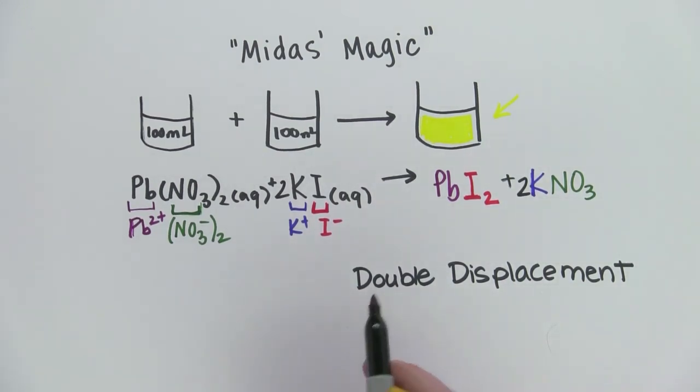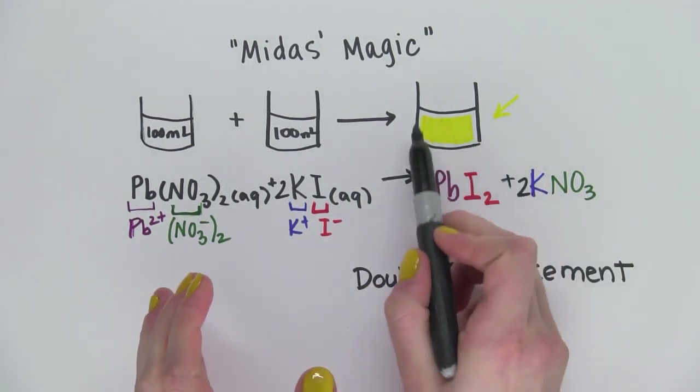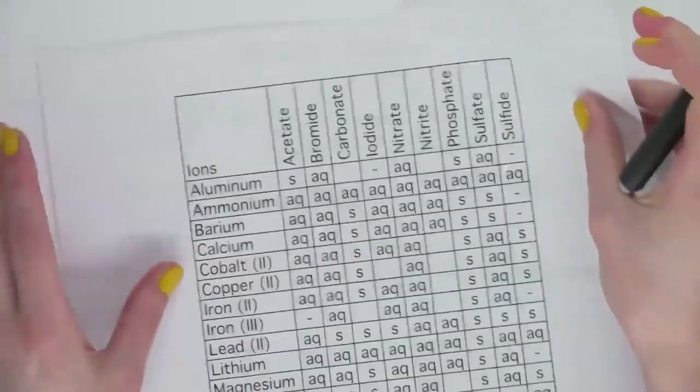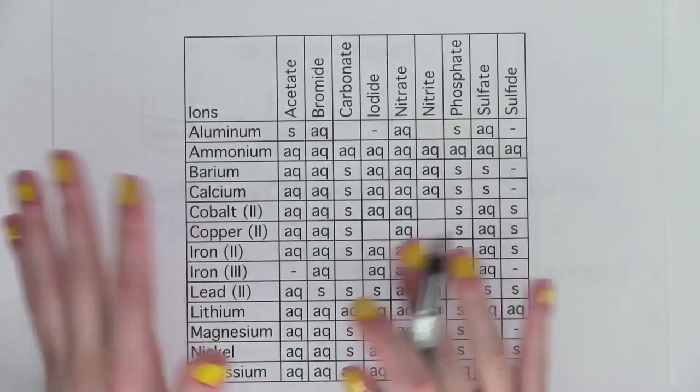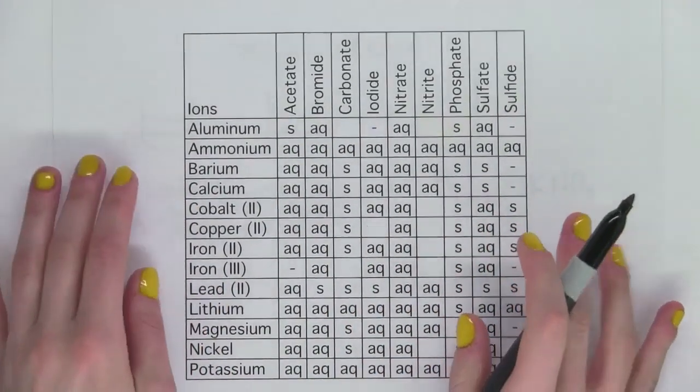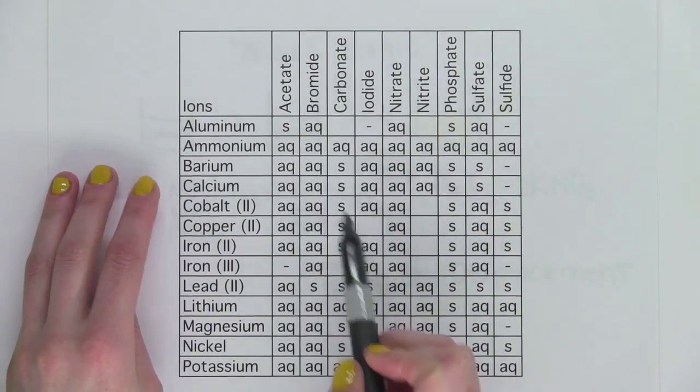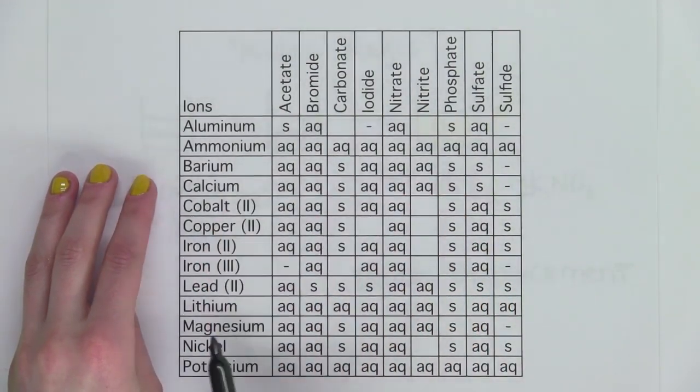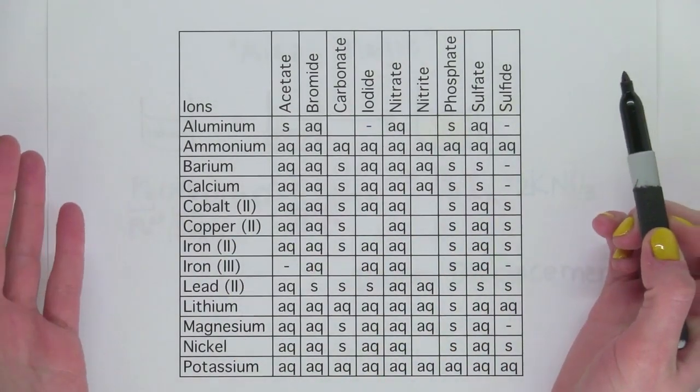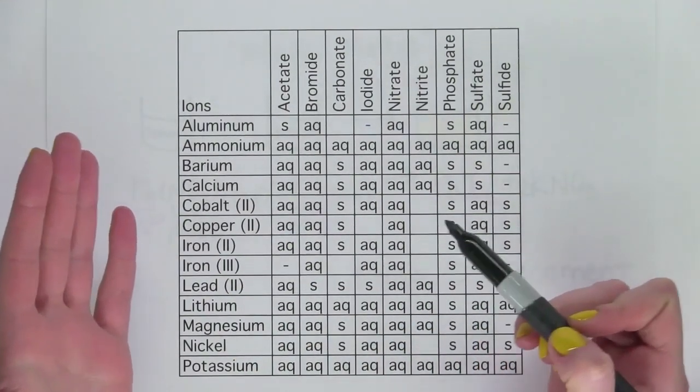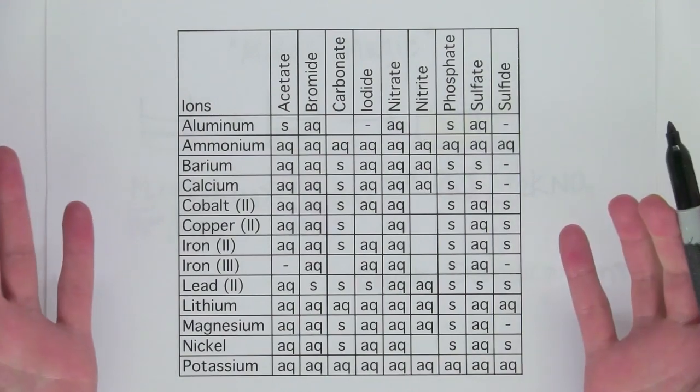So how can we predict which one of these two compounds is the yellow precipitate? Hundreds of years ago, chemists mixed ions together. And they came up with solubility tables just like this one. Now this chart basically shows us when these two ions, an ion from this column and this column are mixed together, is their product, a compound that they form, soluble or insoluble in water.